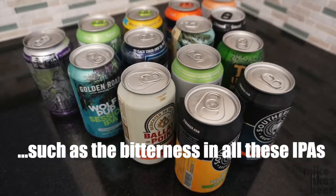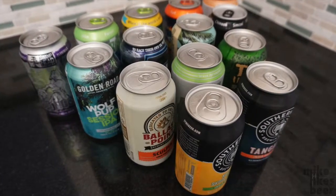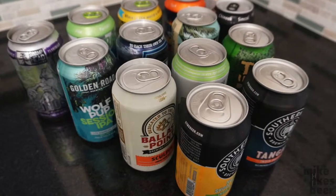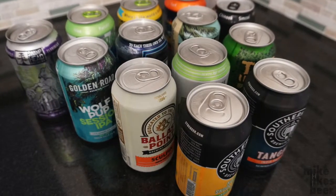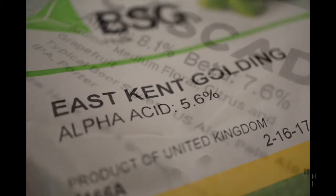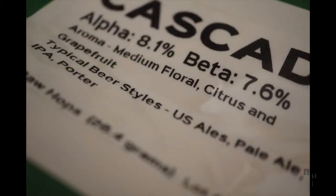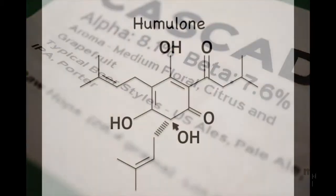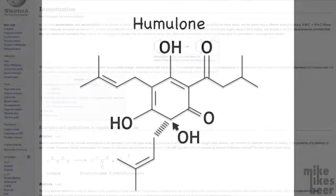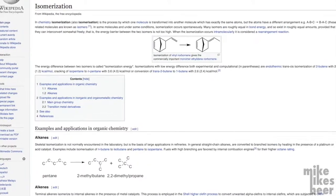So what is it about hops that makes beer taste bitter? The primary source of bitterness is the alpha acids in the hops. During the boil, these acids — specifically one known as humulone, which comes from the resin of the hops — are transformed into isohumulones through a process called isomerization.